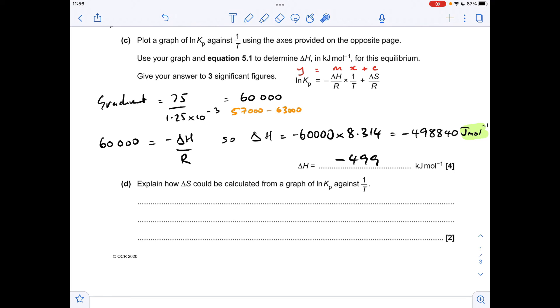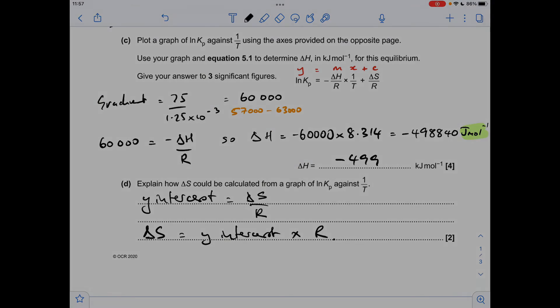So moving on to the final part of the question, how would you calculate delta S from the graph. We'll go back to this equation, straight line equation, y equals mx plus c. The y-intercept has got the delta S term in it. So that means the y-intercept equals delta S over R. So all we need to do to calculate delta S is multiply the y-intercept by the gas constant R.